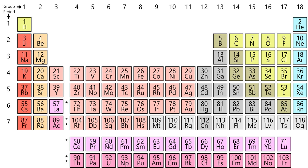For group 3, since they display fewer similarities and vertical trends, elements in the same group tend to show patterns in atomic radius, ionization energy, and electronegativity. From top to bottom in a group, the atomic radii of the elements increase, since there are more filled energy levels and valence electrons are found farther from the nucleus. From the top, each successive element has a lower ionization energy because it is easier to remove an electron since the atoms are less tightly bound. Similarly, a group has a top-to-bottom decrease in electronegativity due to an increasing distance between valence electrons and the nucleus. There are exceptions to these trends — for example, in group 11, electronegativity increases farther down the group.